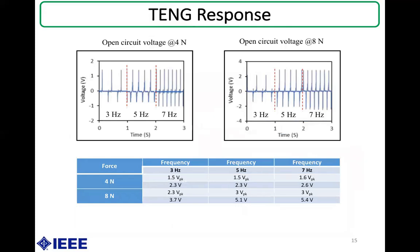Here we present the voltage response of the nanogenerator at 4 newtons of applied force at three different frequencies: 3 Hz, 5 Hz, and 7 Hz. The open circuit voltage increases from 2.3 V to 2.6 V as frequency increases from 3 Hz to 7 Hz. Similarly, the open circuit voltage was recorded as 5.4 V for 8 newtons at 7 Hz.